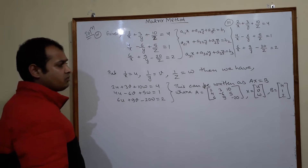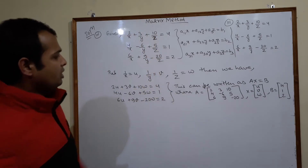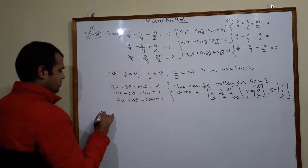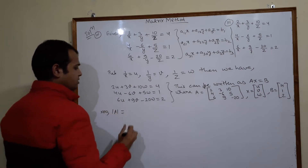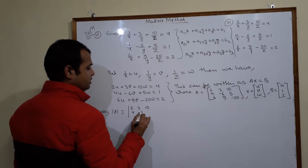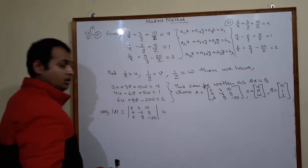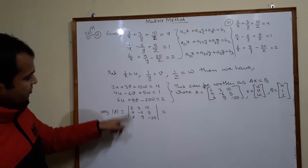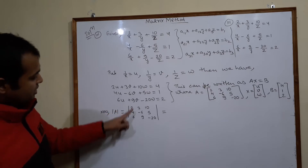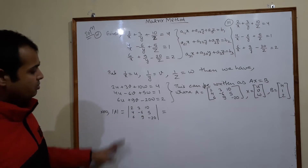Then you know how to solve it. Since we are using the matrix method, first we need to find the determinant. The determinant uses the matrix [[2, 3, 10], [4, -6, 5], [6, 9, -20]]. We observe that in the first column 2, 4, 6 — 2 is common; in the second column, multiples of 3; in the third column, multiples of 5.